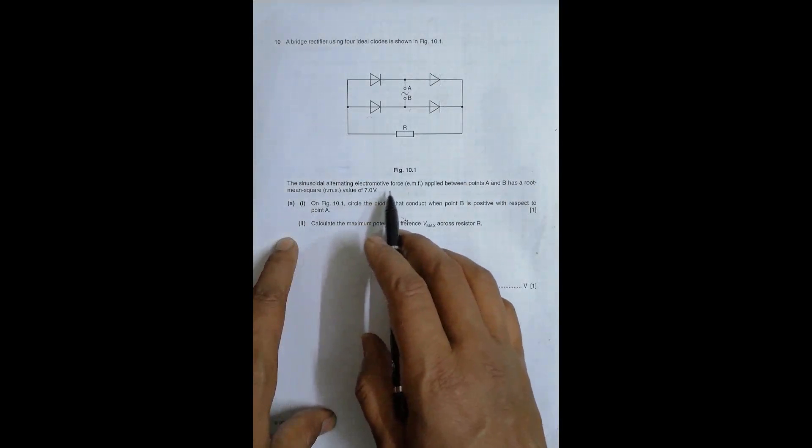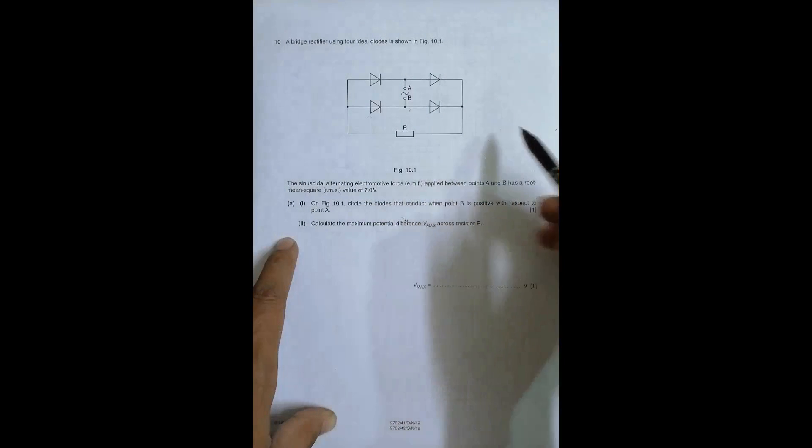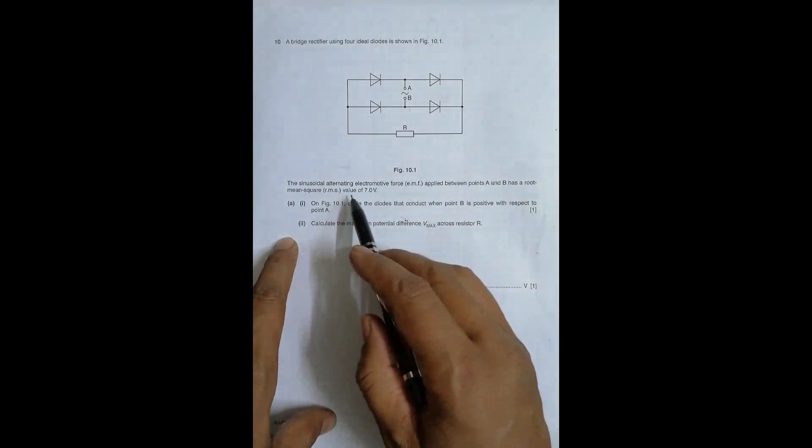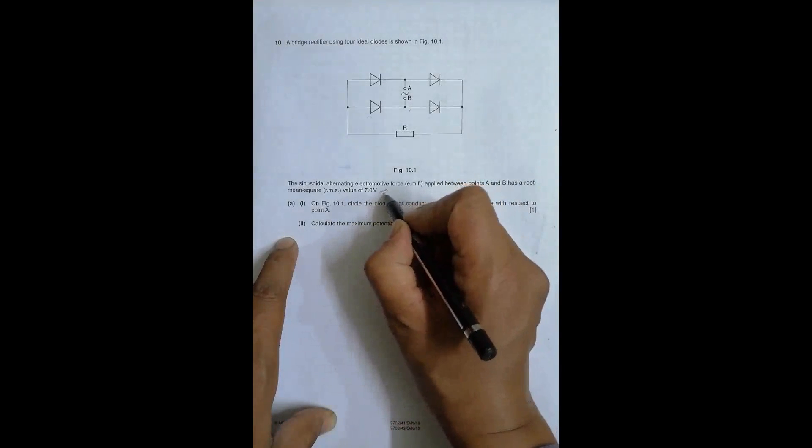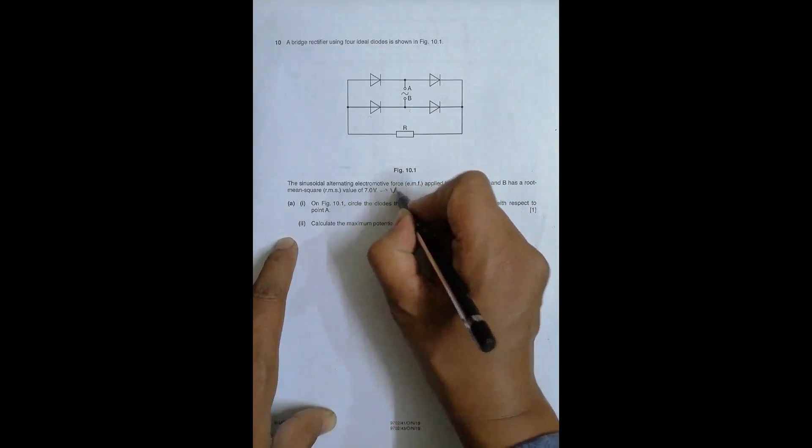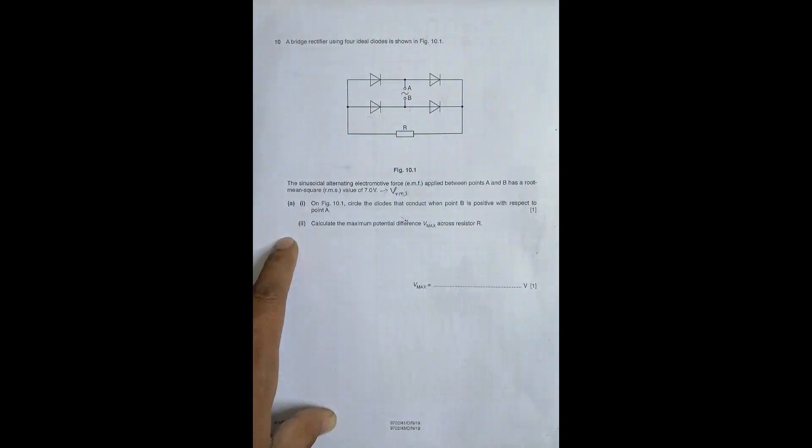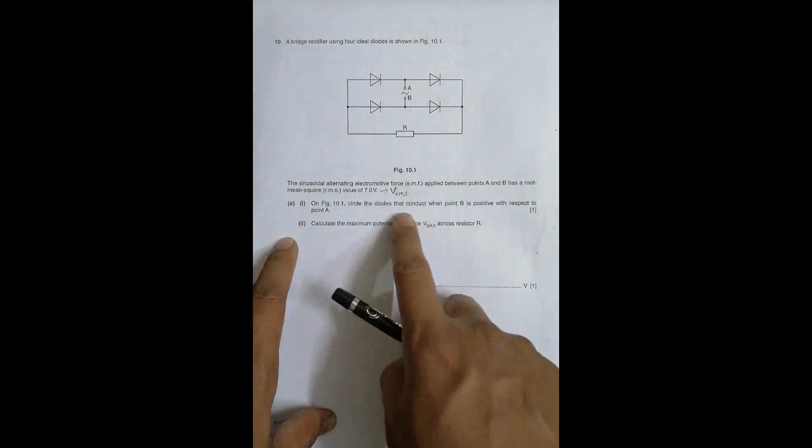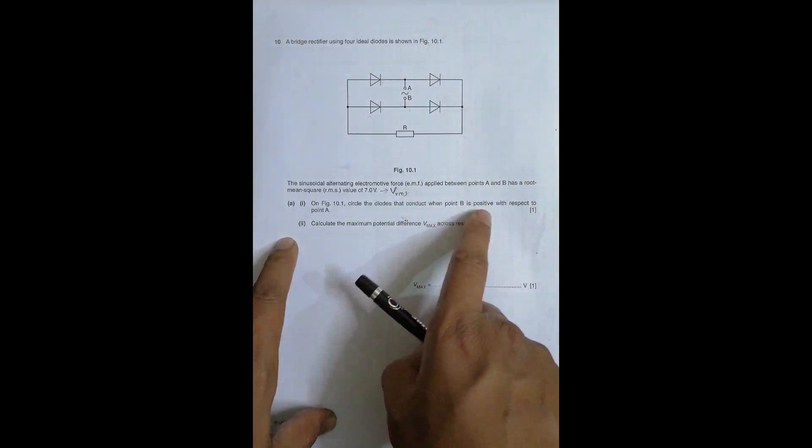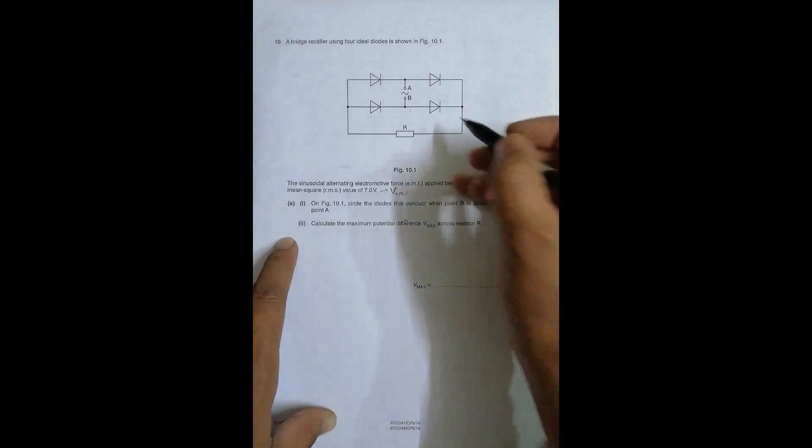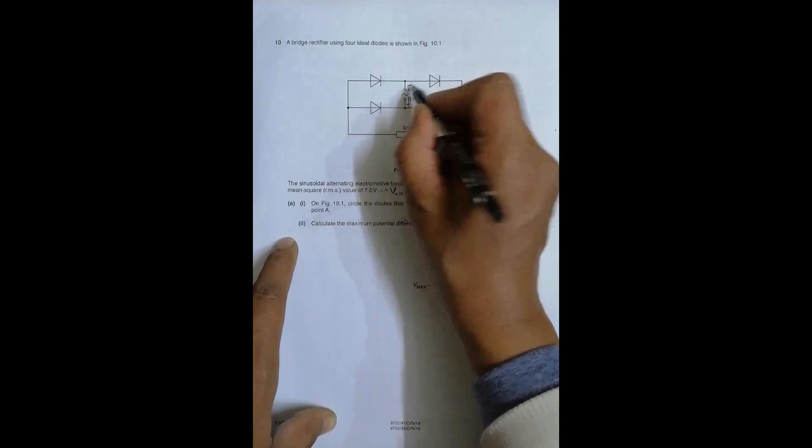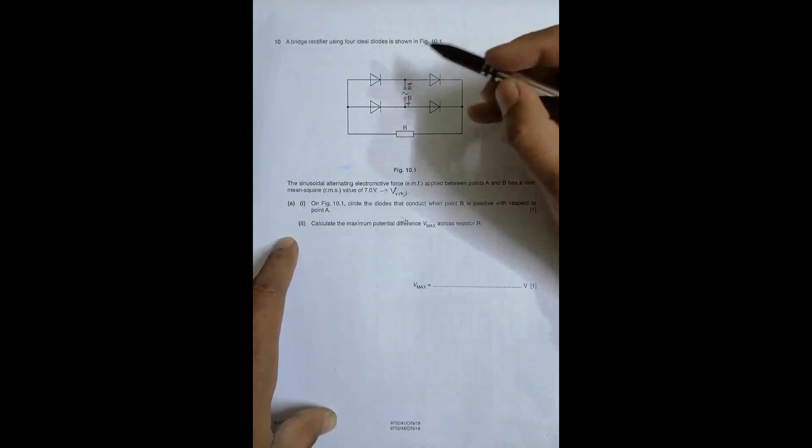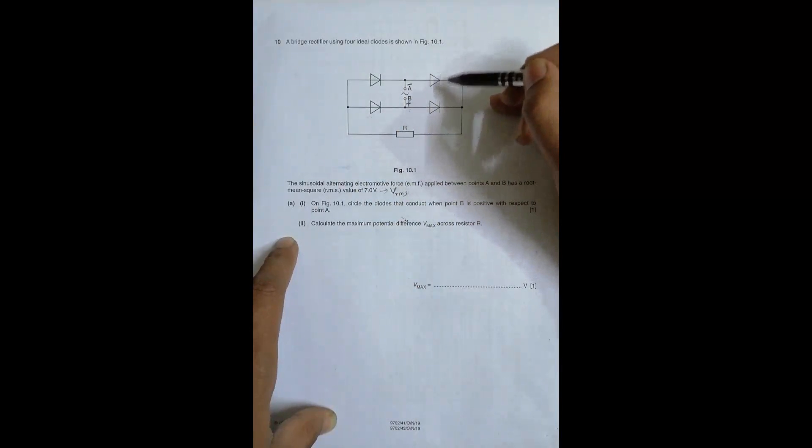The sinusoidal EMF applied between points A and B has a root mean square value of 7.0 volts. So this is equal to VRMS. On figure 10.1 circle the diodes that conduct when point B is positive with respect to point A. So B is positive compared to A. So we have to find which diode will conduct.